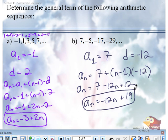And check it. If you plug in one, you should get seven. Plug in two, you should get negative five. So on and so forth.